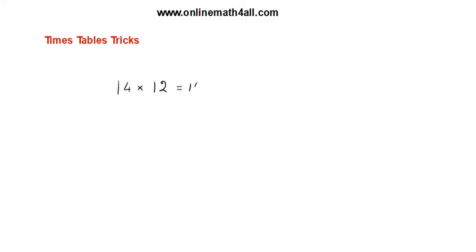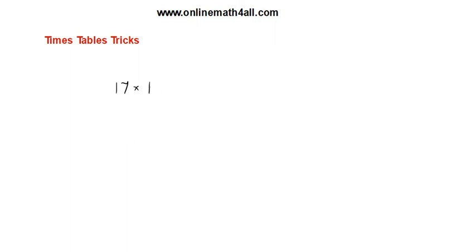Let us look at more examples. 17 times 12: add 2 to 17 to get 19, make it 190. Then 2 times 7 is 14, and 190 plus 14 is 204. The product is 204. Another example: 15 times 16. Add 6 to 15 to get 21, make it 210. Then 6 times 5 is 30, and 210 plus 30 is 240. The product is 240.